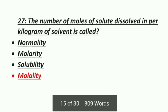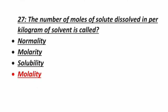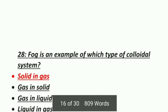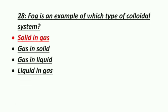Twenty-seventh MCQ: the number of moles of solute dissolved per kilogram of solvent is called — Option 1: Normality, Option 2: Molarity, Option 3: Solubility, Option 4: Molality. The correct answer is molality.